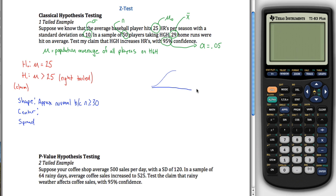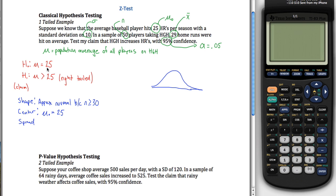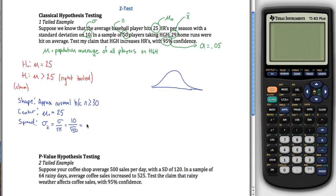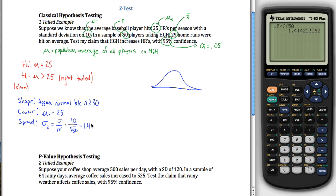I'll go ahead and draw my distribution — approximately normal. The center of our distribution is mu naught, which equals 25. We don't know mu, so we assume our null hypothesis is correct and that mu equals 25, then figure out how unlikely it would be to get this kind of sample if mu really were 25. The spread is sigma divided by the square root of N — sigma is 10, N is 50 — so 10 over root 50 gives us approximately 1.41.